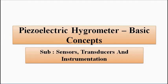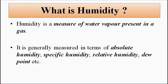Humidity is the amount of moisture or water vapour present in a gas or any substance. Generally, humidity is measured in terms of absolute humidity, specific humidity, and relative humidity. For sensors and transducers, relative humidity is basically used to give the output, which is further calibrated in terms of electrical output such as voltage, current, or frequency change.